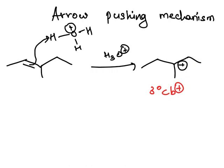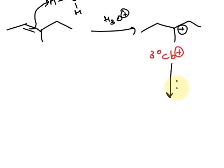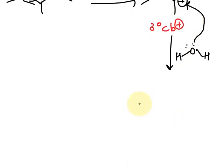In the next step this carbocation reacts with the water molecule. So here we have water molecule. Oxygen is having lone pair of electrons. This lone pair of electrons attack on the positively charged carbon and we have a bond formed between carbon and oxygen. Since this carbon is bonded with three other species it gains a positive charge over here.